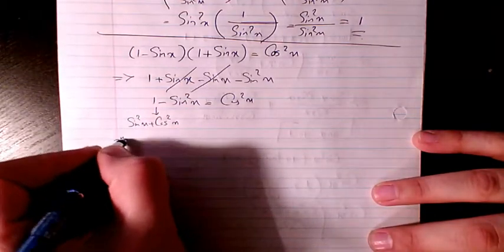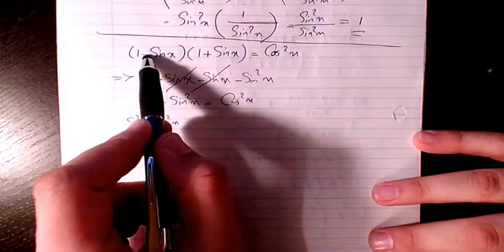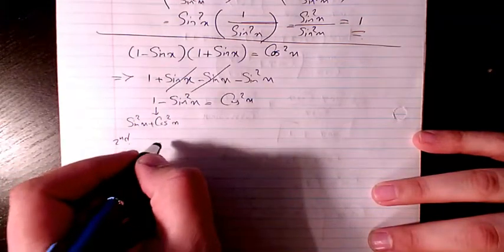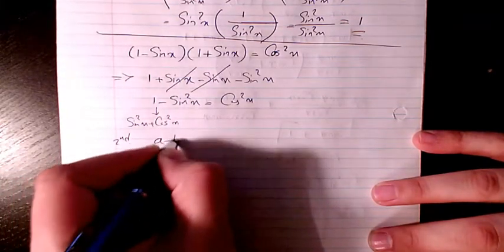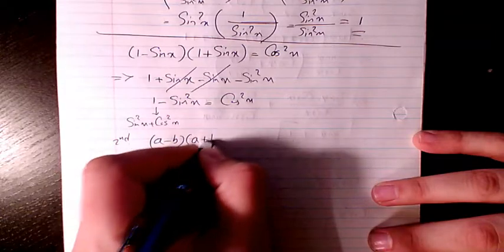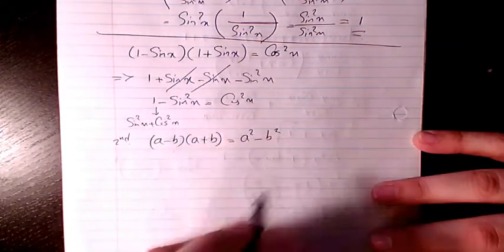Second way to do that is, based on the difference of squares, we have a minus b times a plus b always equal to a squared minus b squared.